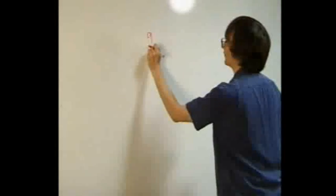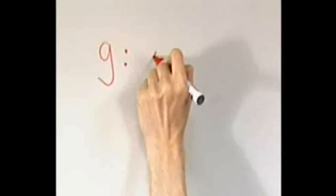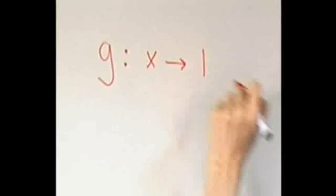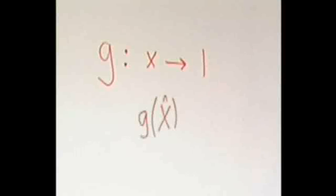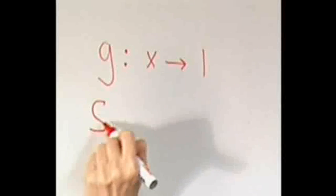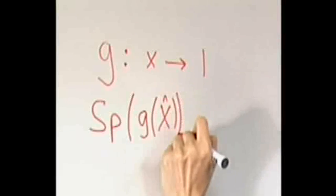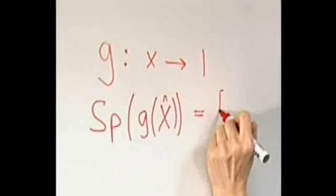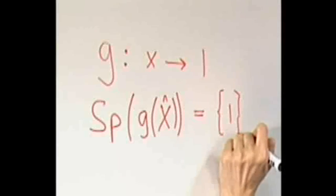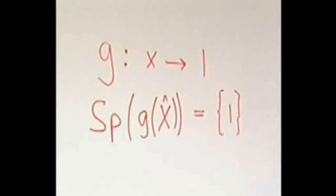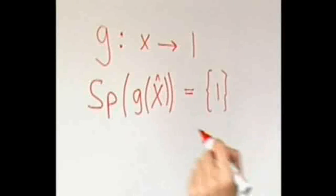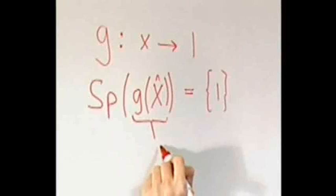Now, let g be the function that maps any real number to a constant, say 1. Consider the observable g of x. Its spectrum just contains a single element. Spectrum of g of x equals the set containing just 1. And therefore, to measure g of x, you don't even have to do an experiment. All you have to do is write down the outcome was 1. We call this trivial observable the unit observable, 1 hat.